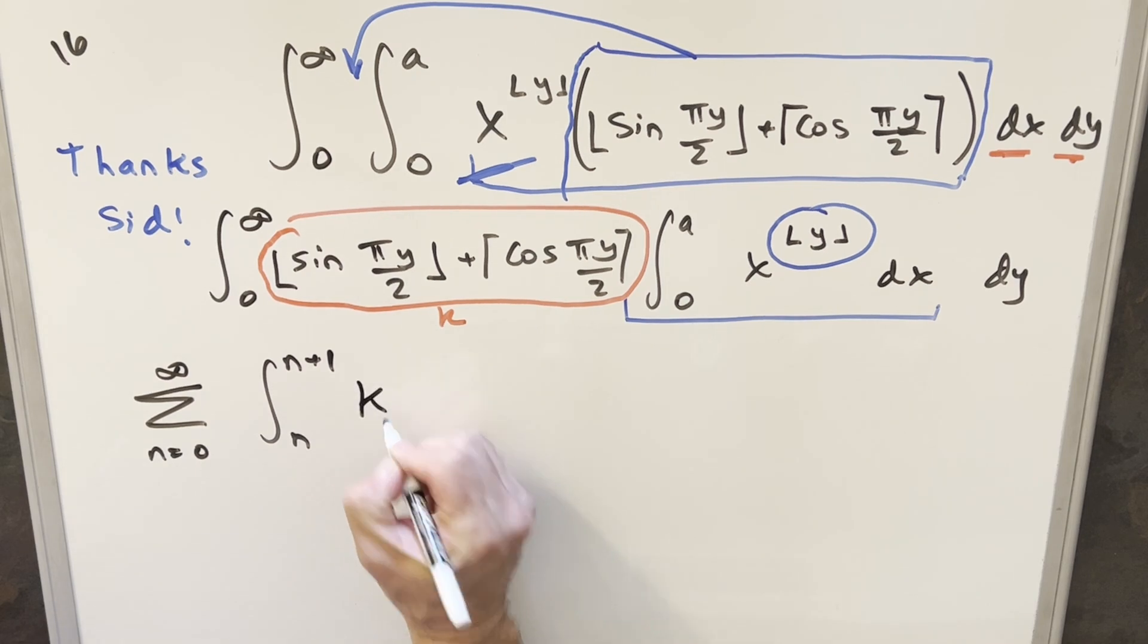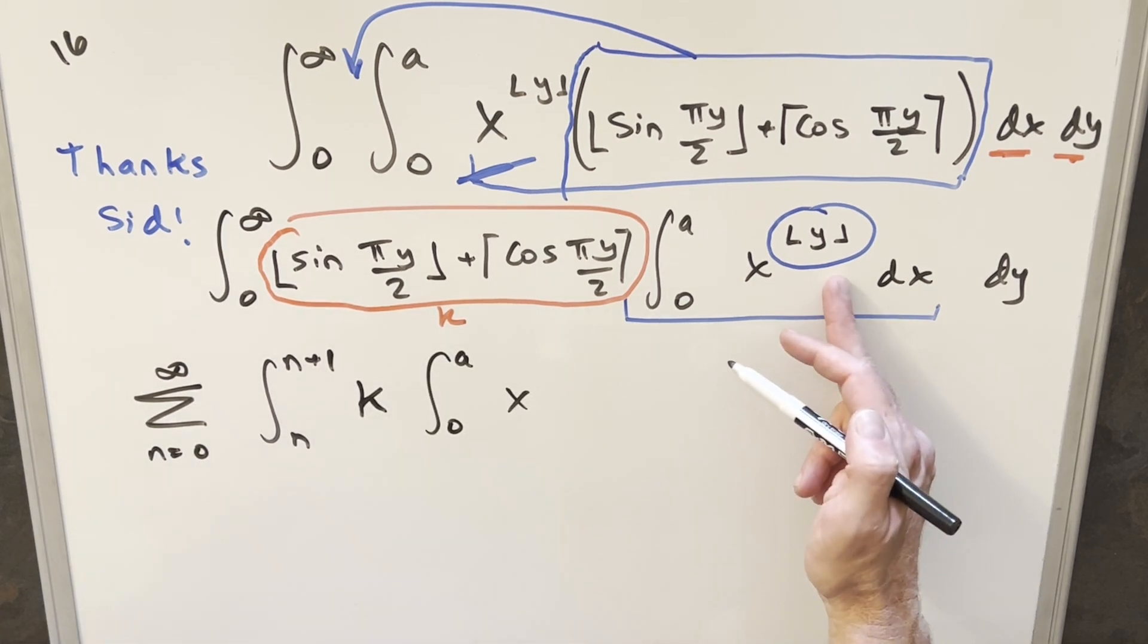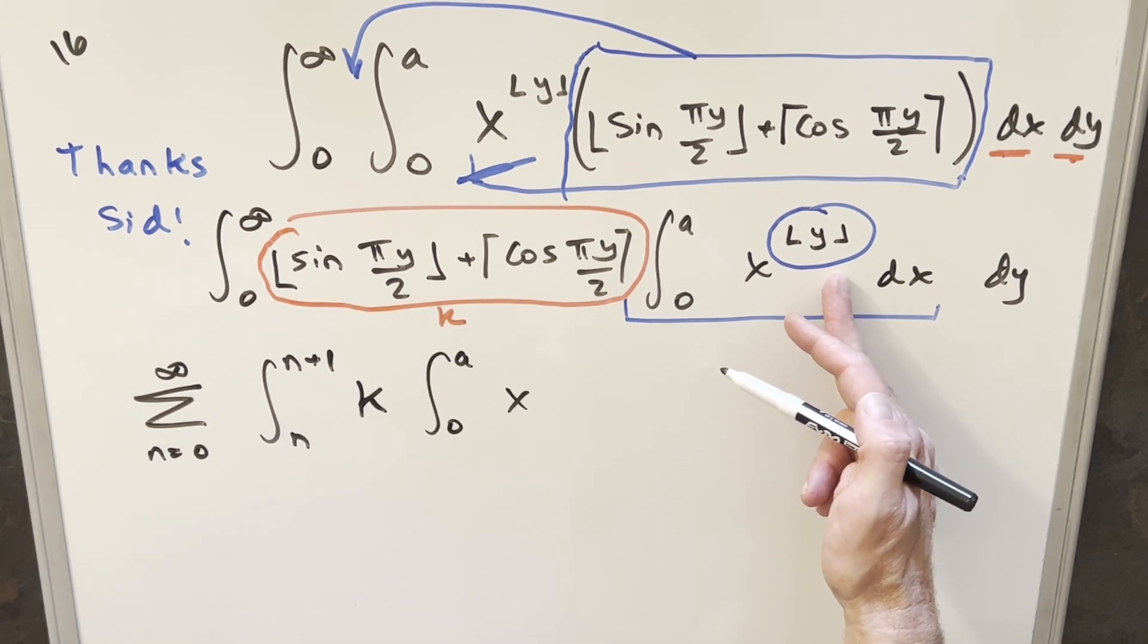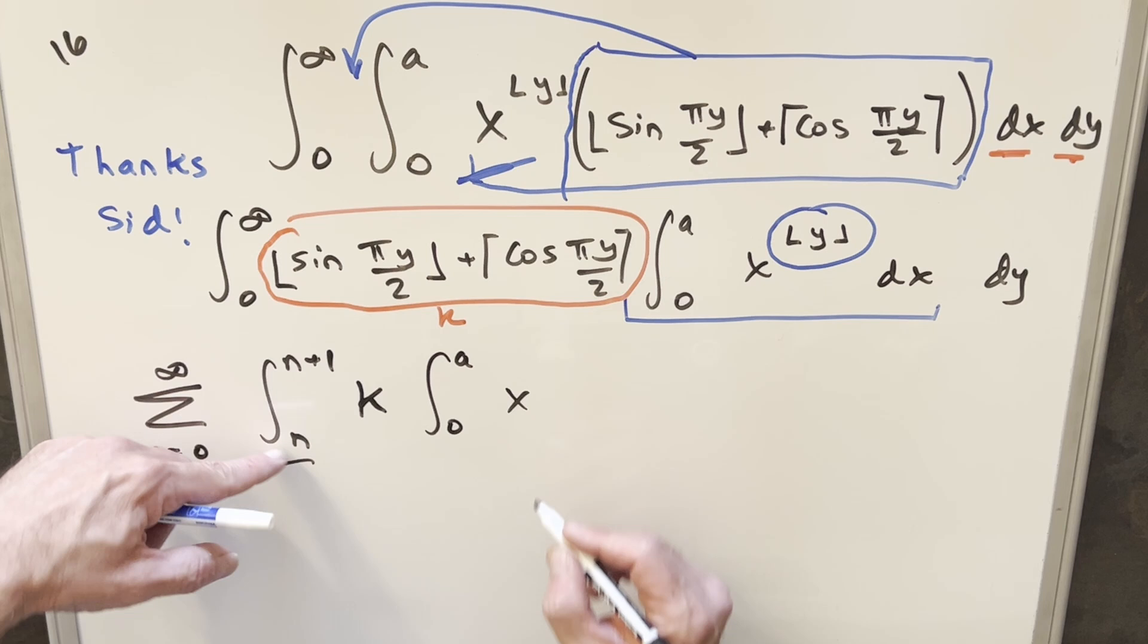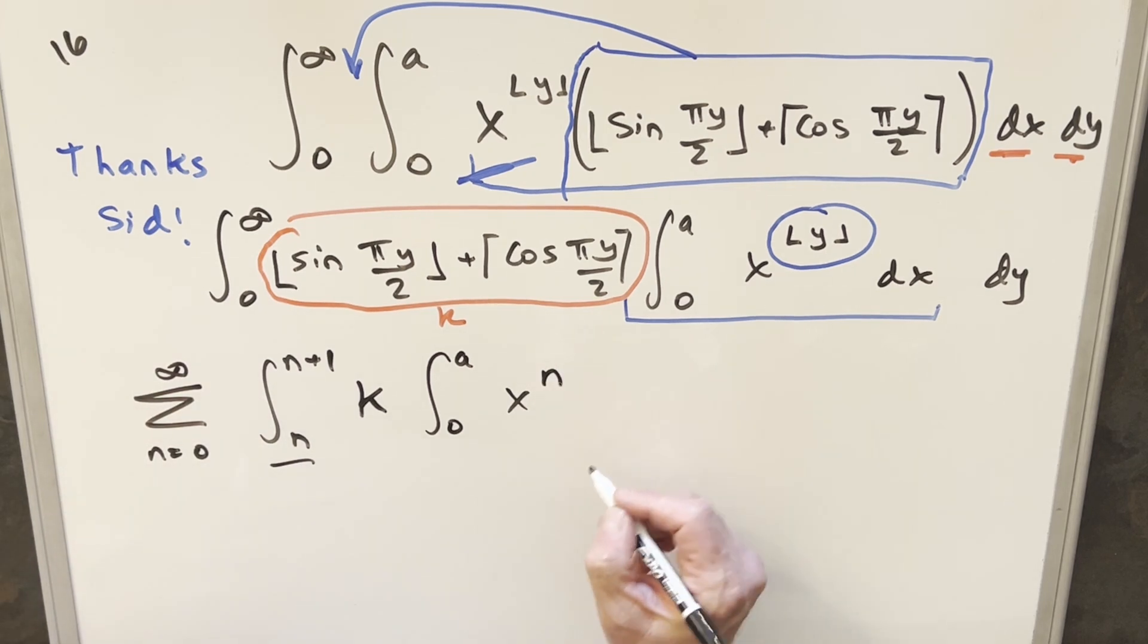So for all this stuff right here, I'm going to just call this k, because it is going to reduce down to some constant value. But now we can actually evaluate this floor of y here, because all of our y values within this integral are going to be between n and n plus one. And the floor is going to round this down to the lower bound. So this exponent on here is just going to become an n.